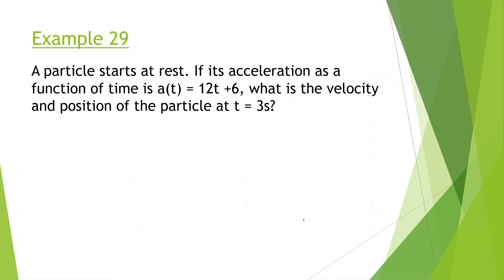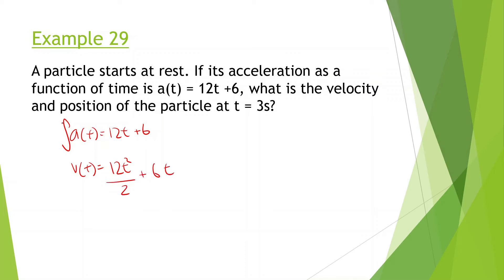Let's look at the next example. A particle starts at rest. If its acceleration as a function of time is given as 12t + 6, what is the velocity and position of the particle at t = 3 seconds? The area under the acceleration curve gives us the change in velocity, so taking the integral: velocity as a function of time equals 12t²/2 + 6t. Then the integral of velocity gives us position: 12t³/(2·3) + 6t²/2.